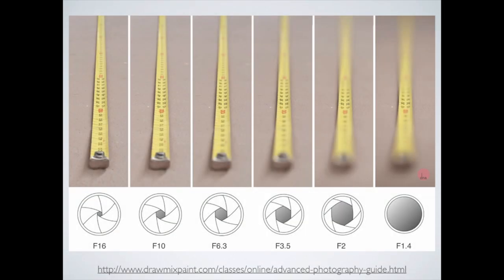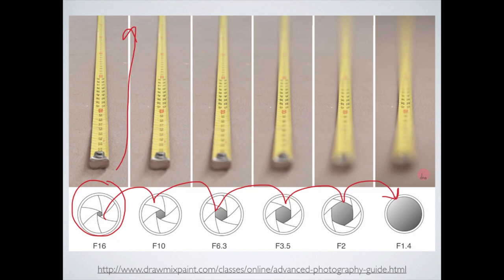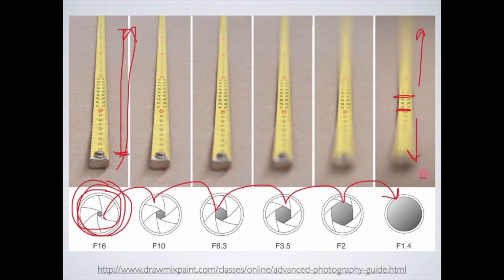Here's another example that helps explain it a bit more. We have the aperture shown at the bottom — what the camera lens looks like and how much light is coming through — and then we see a tape measure showing how much of it is in focus. As we progress, when we get to the very end where the camera is wide open, it's just a very little tiny bit that's in focus, and everything in front and behind is completely blurred. The smallest lens is going to give us the most of the tape measure in focus. This is important to know because you have to decide how much of the final image you want in focus based on the type of image you're taking.